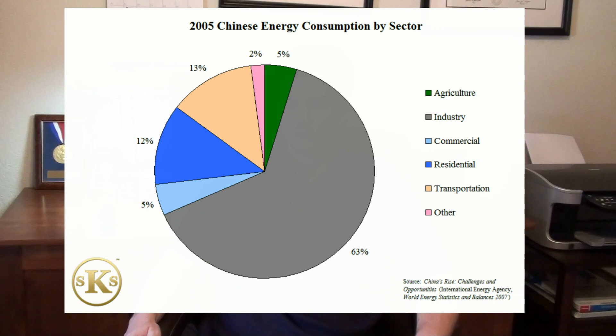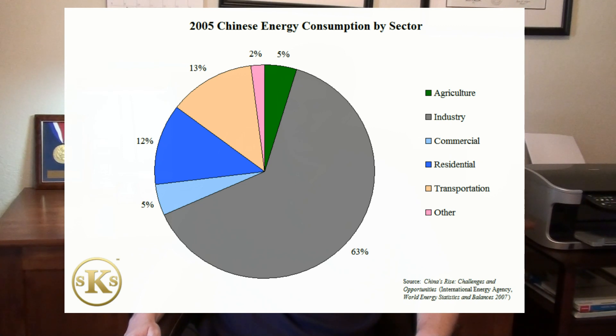Emerging markets frequently rely on weak currencies and exports to build current account surpluses. This strategy necessitates a focus on industrial growth at the expense of domestic consumption, because the weakness of the country's currency makes imports expensive. This cycle creates vastly different patterns of consumption than those found in more developed economies.